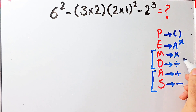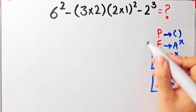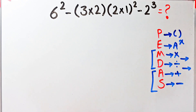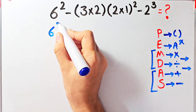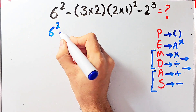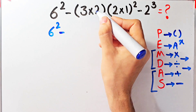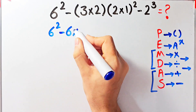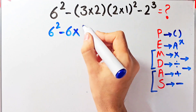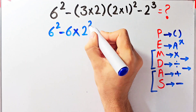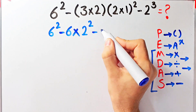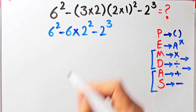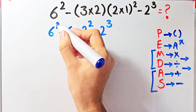We simplify the question according to the PEMDAS rule. First we simplify the parentheses: we have six to the power of two, minus three times two which equals six, then times two times one which equals two, to the power of two, then minus two to the power of three.